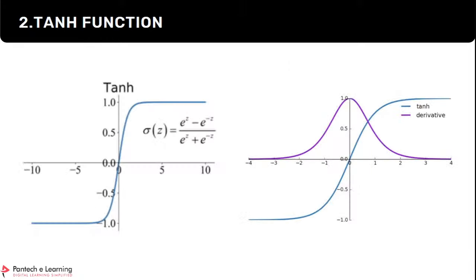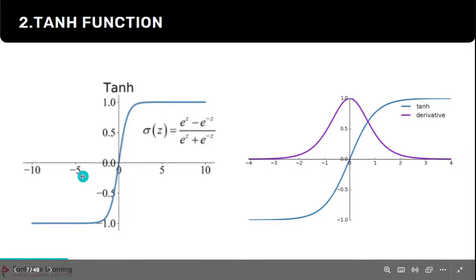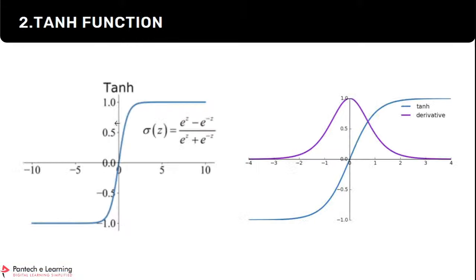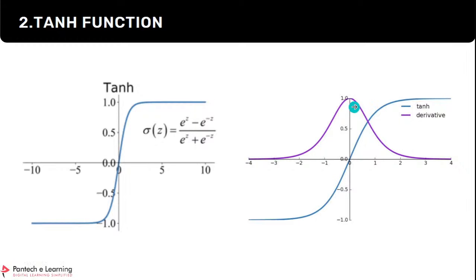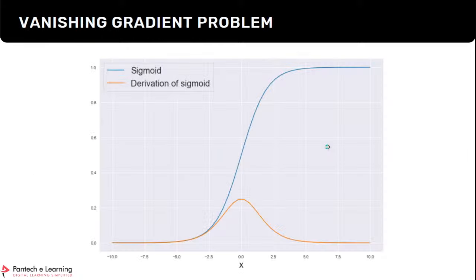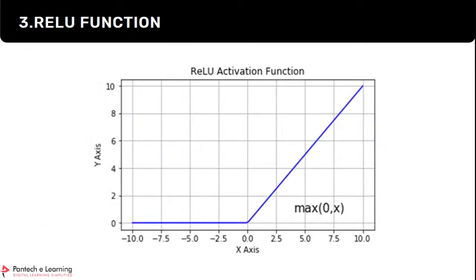The next activation function is tanh. Tanh applies a particular formula and the output is between minus 1 and plus 1, rather than 0 to 1 as in sigmoid. When you take a derivative of tanh, it is between 0 and 1, not limited to 0.25, so the vanishing gradient problem of sigmoid is addressed in tanh. Tanh is an option you could choose for your hidden layers or input layer — we mostly won't use tanh in the output layer.